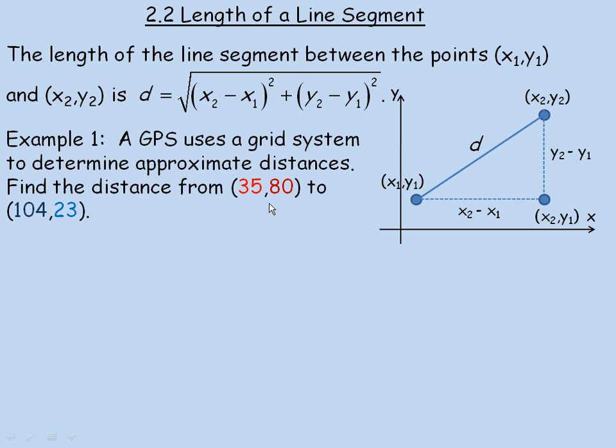We're going to use this in an example on this page and one on the next. A GPS uses a grid system to approximate distances. And there would be some reference point, so this might be 35 kilometers west of some point and 80 kilometers north, and similar with 104, 23. So there would be some reference point that these distances in kilometers are west and north or south and east from.